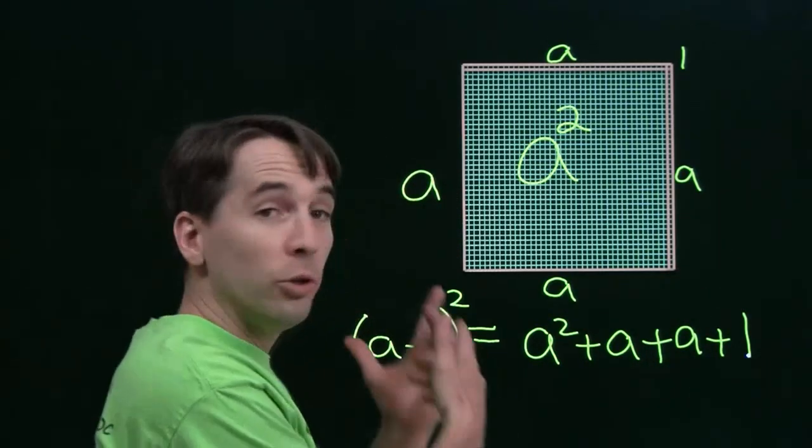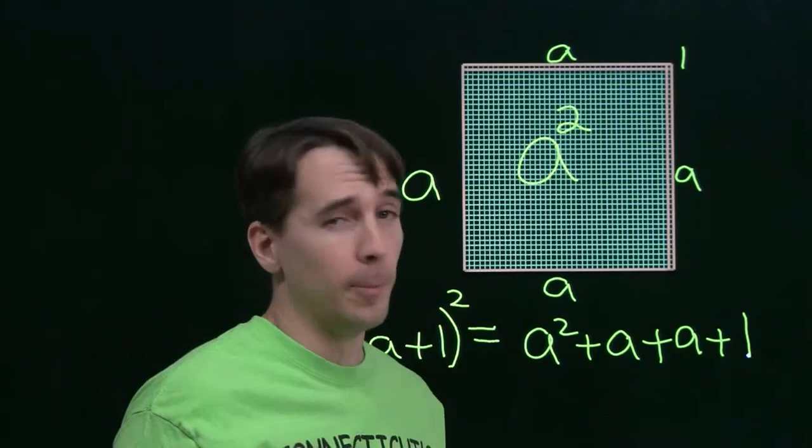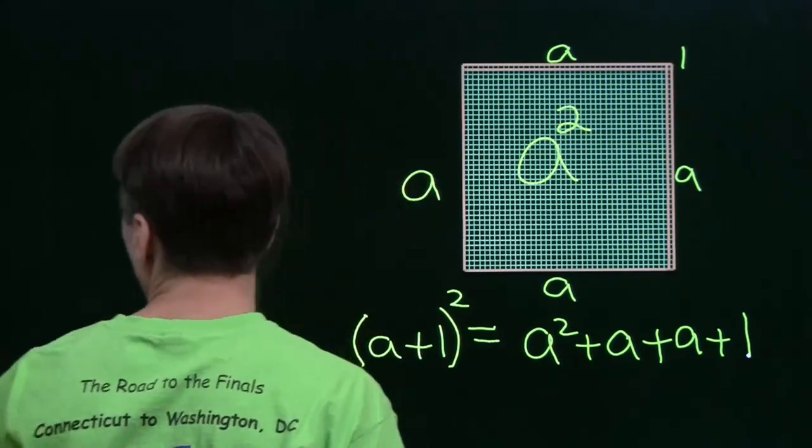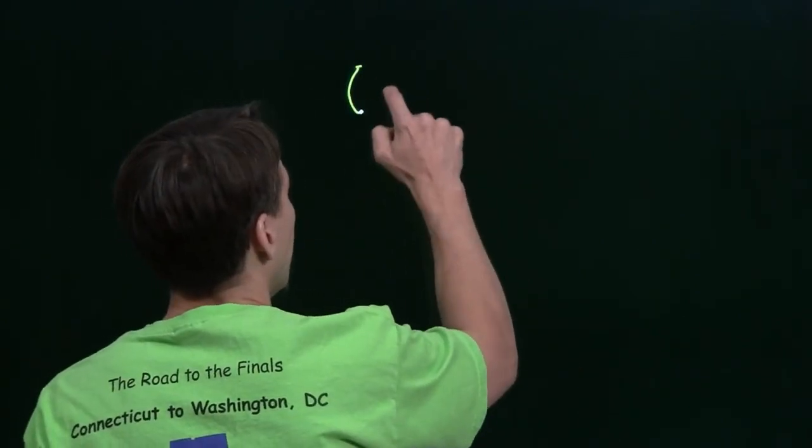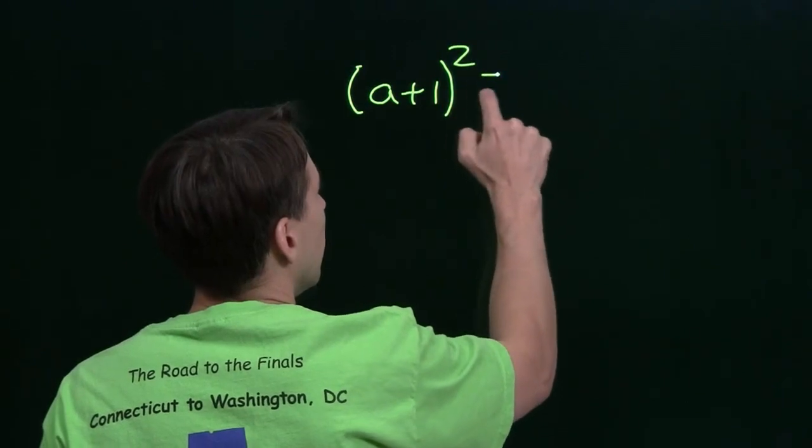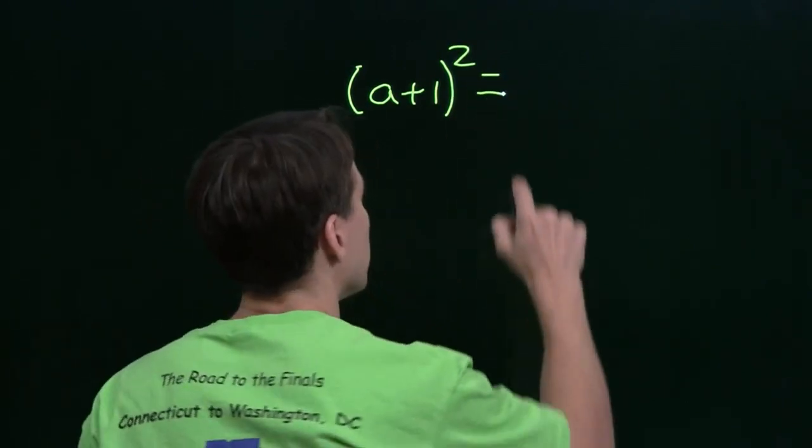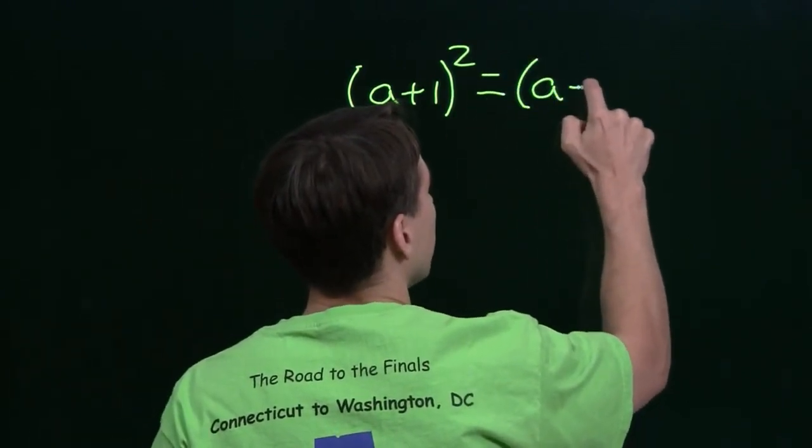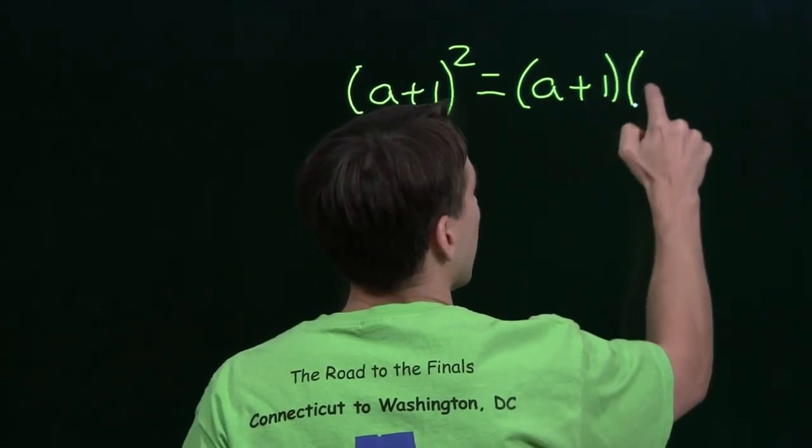What's that? Oh, you think I'm tricking you with my picture somehow? Very good, very good. Well, let's see if we can explain this without drawing a picture. So, again, we'll start with a plus 1 squared, and of course, squaring something just means I'm multiplying it by itself, so this is a plus 1 times a plus 1.